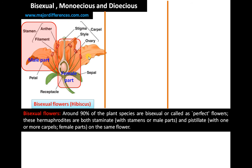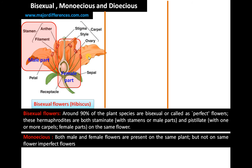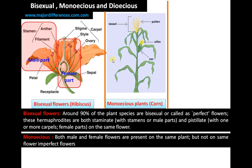In the case of animals, hermaphrodites are seen in earthworms, where both sexes are present on the same organism. The second term, monoecious, refers to a monoecious plant where both male and female flowers are present on the same plant, but not on the same flower — the flowers are imperfect.